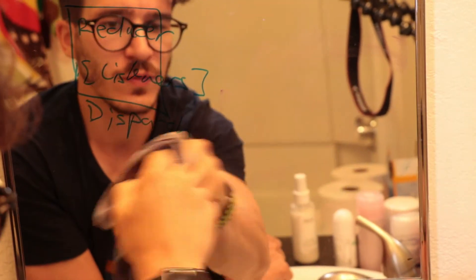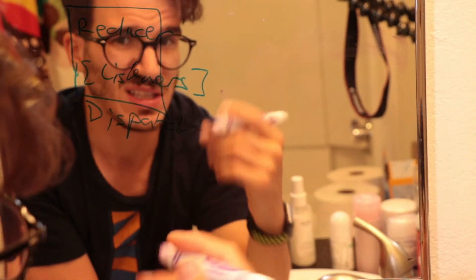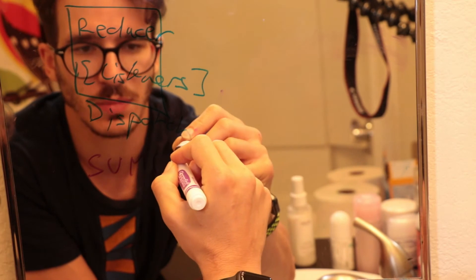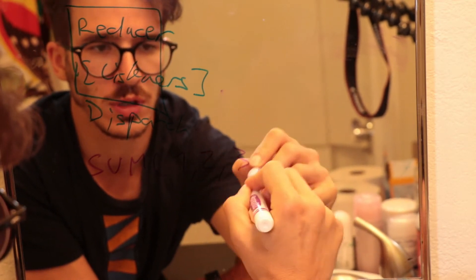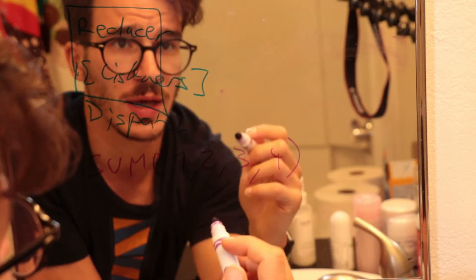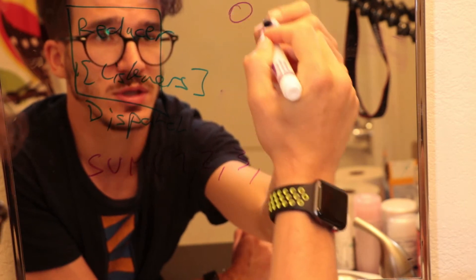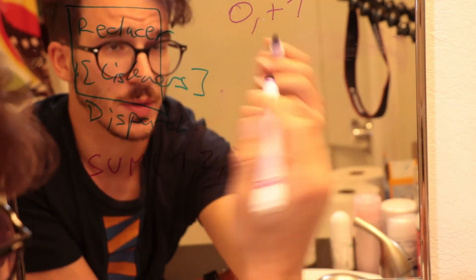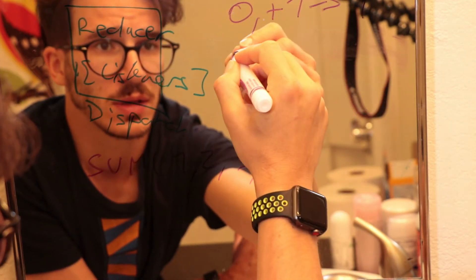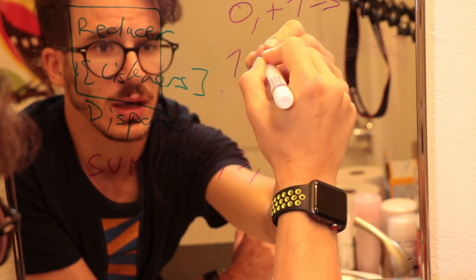So what the reducer then does, think of a reducer as, let's say, we have a sum function. So how do you sum 1, 2, 3, and 4? The functional way to do that is to say you start with 0 and you have an action of plus 1, so 0 plus 1. Then you have a state of 1 and an action of plus 2, so the state becomes 3.